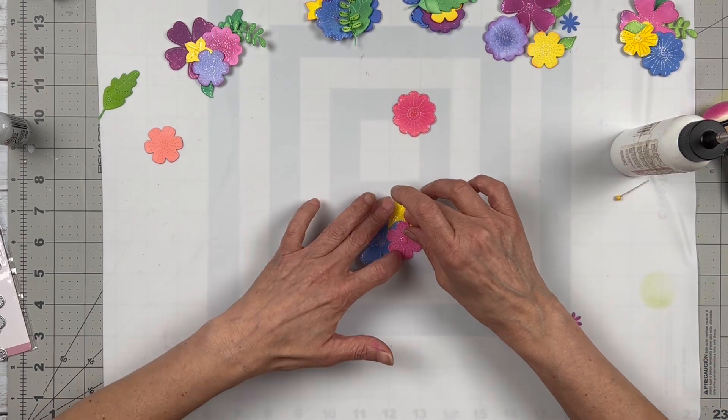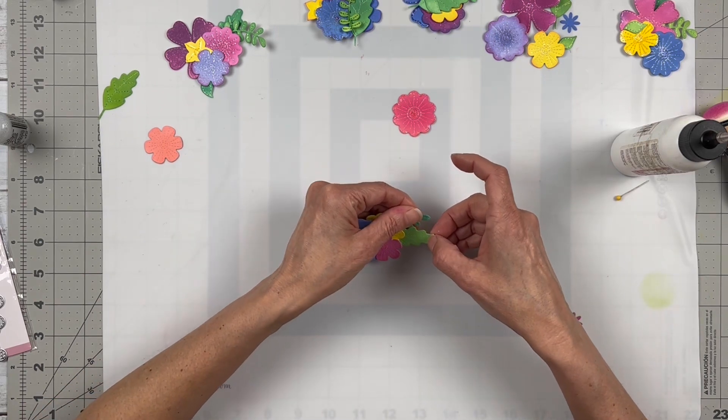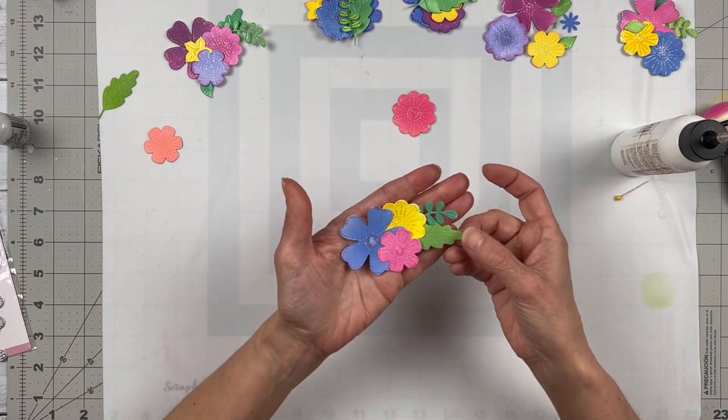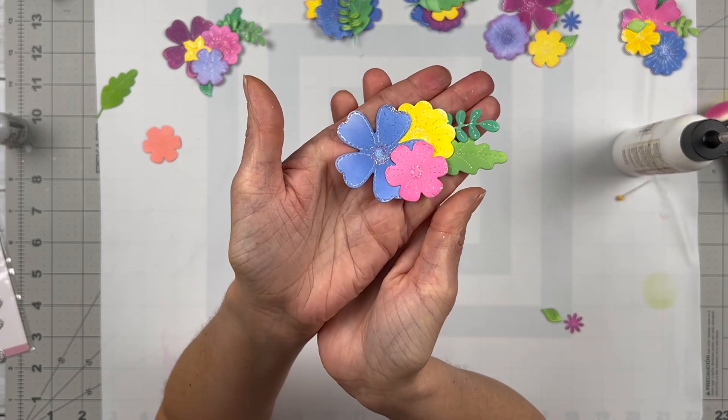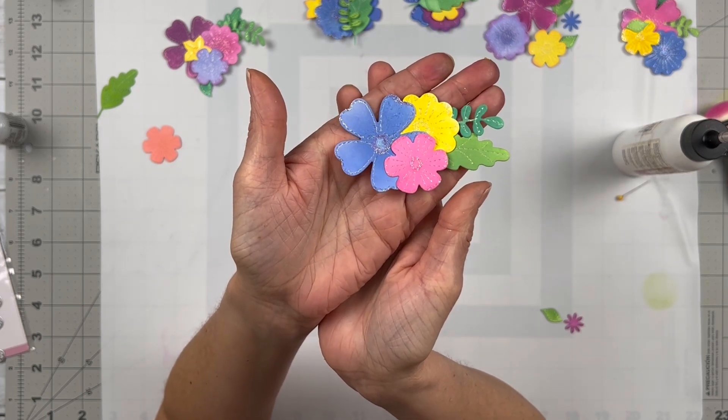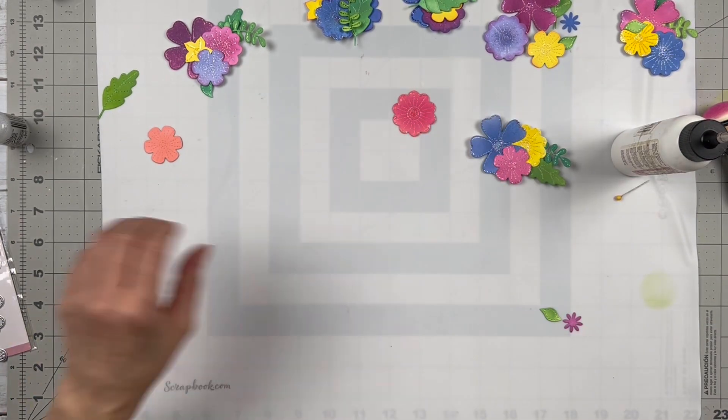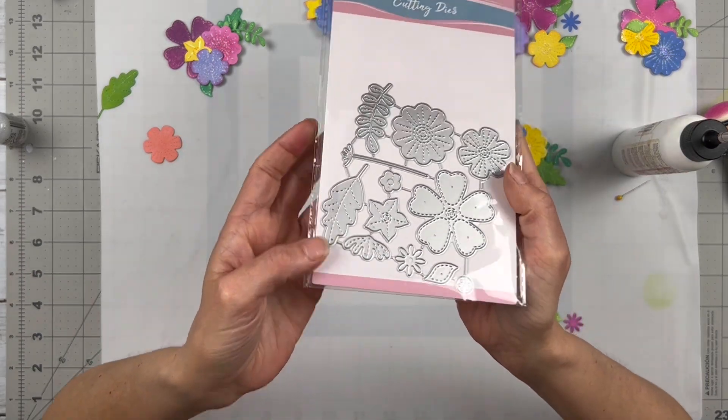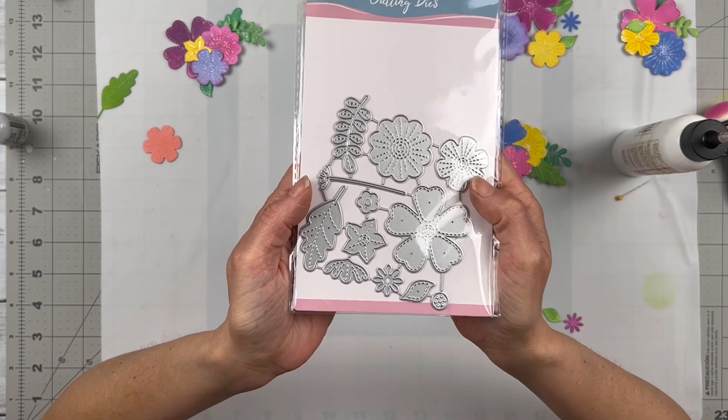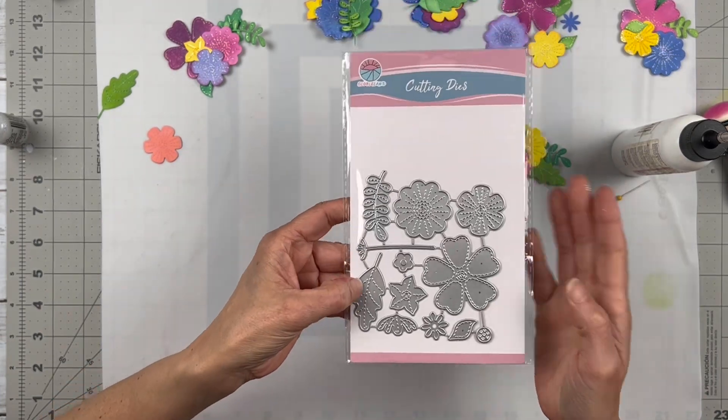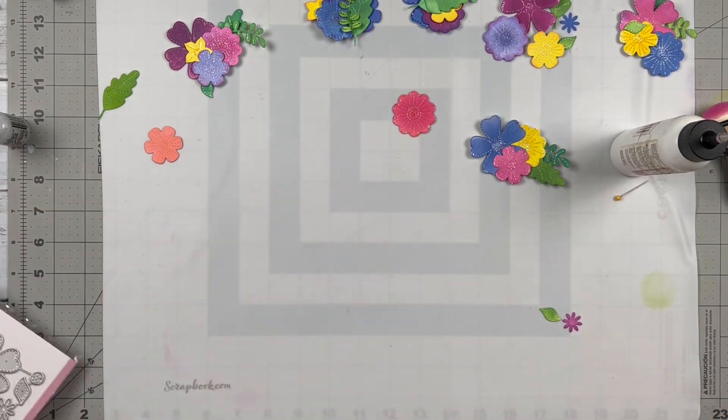And that my friends, if it dries, is a cute little layered floral cluster embellishment. I will link this die cut from Global Land in the description box below. There is also a code down there - KELLY10 - for 10% off.